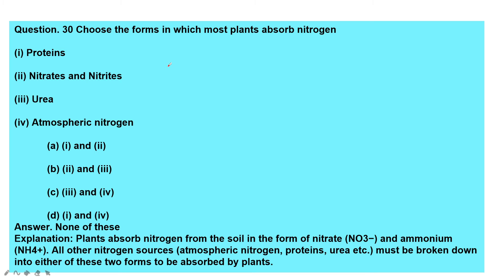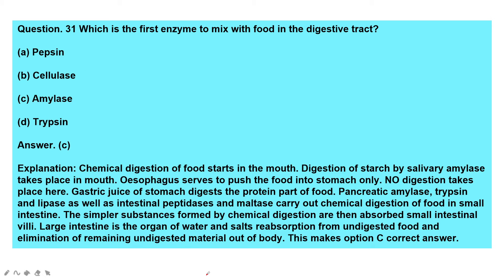Question: Choose the form in which most plants absorb nitrogen — proteins, nitrates and nitrites, urea, or atmospheric nitrogen? Plants absorb nitrogen from the soil in the form of nitrates and ammonia. All other nitrogen sources such as atmospheric nitrogen, proteins, and urea must be broken down into either of these two forms before being absorbed by plants.